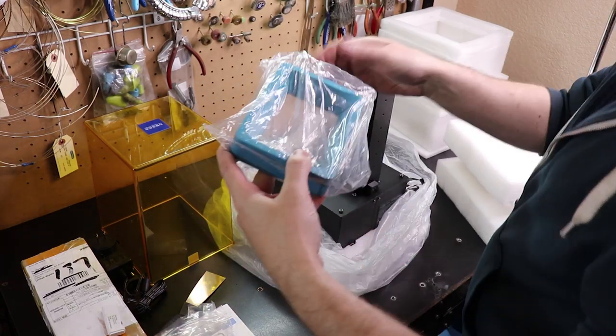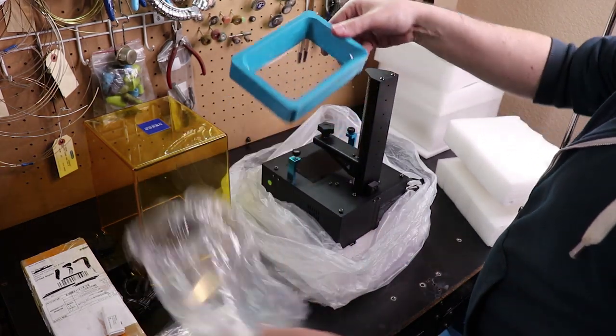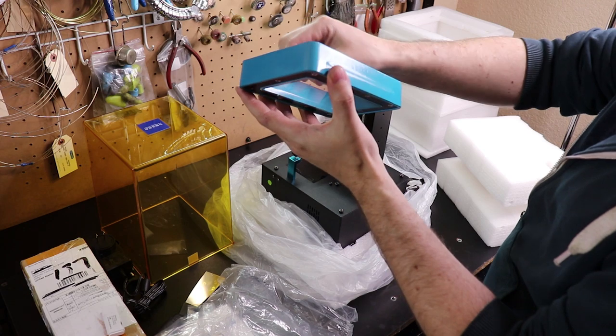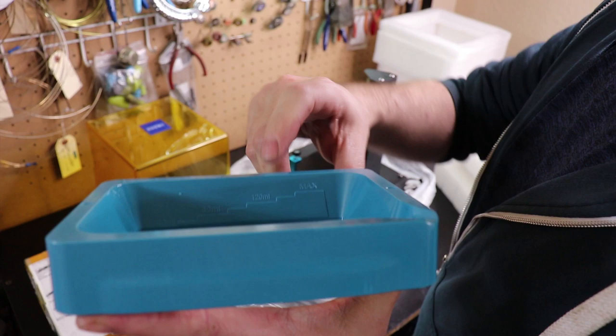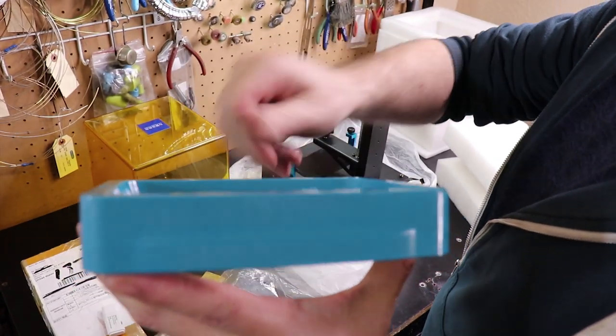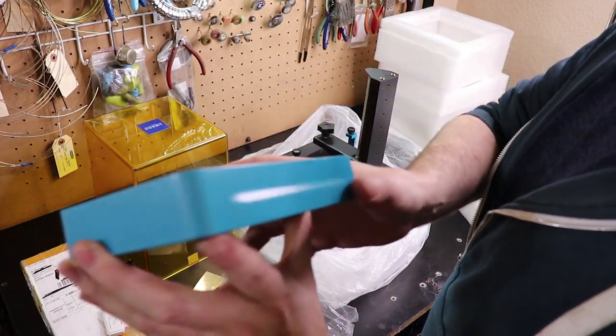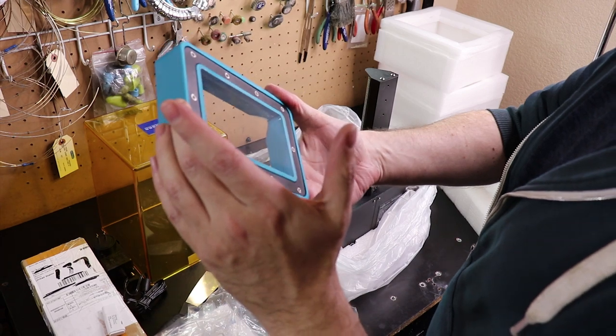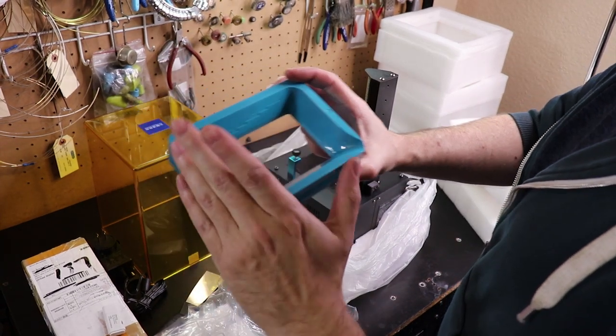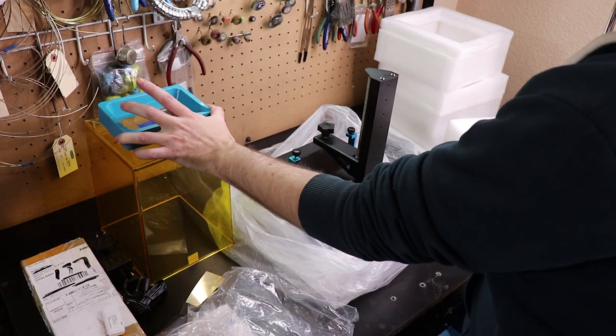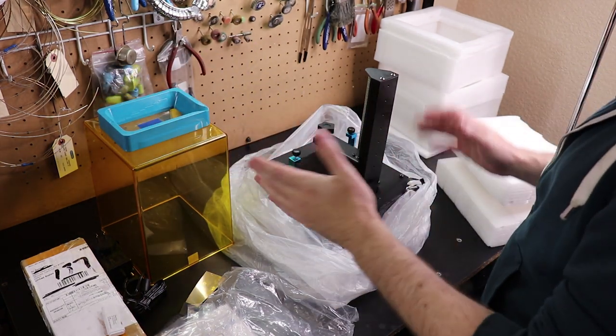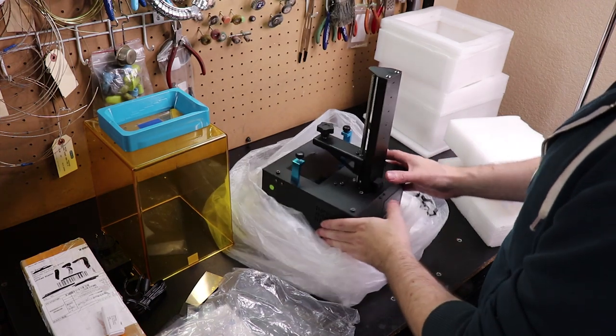This is the resin bed or reservoir. You can see it has little markers in it for how much is in here, which is a very nice thing to add. I believe the other one didn't have that, though I could be wrong. I have a friend that has the other version of this.